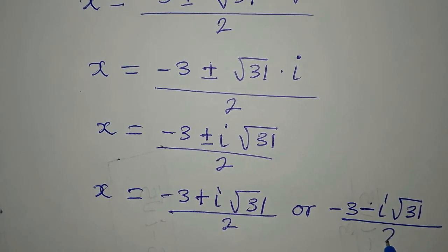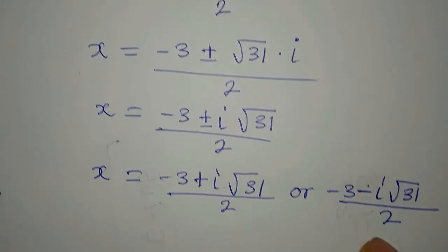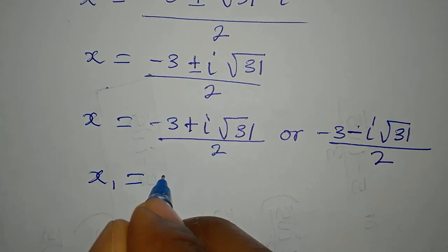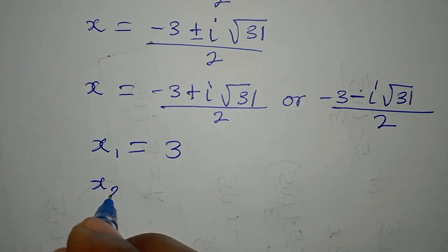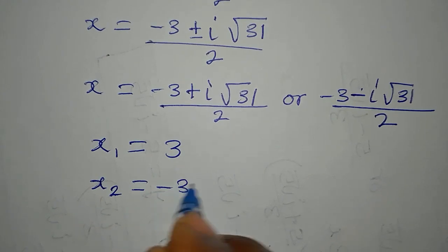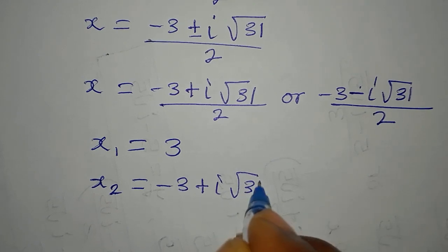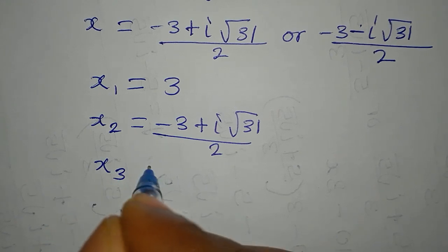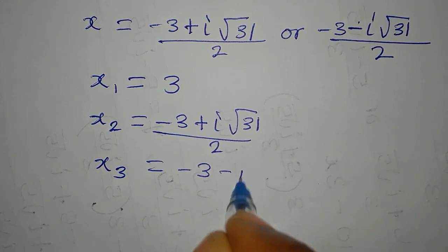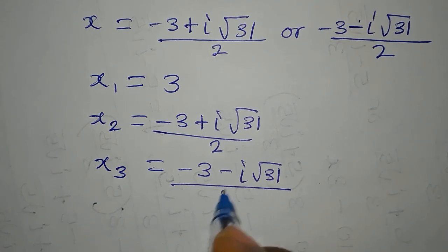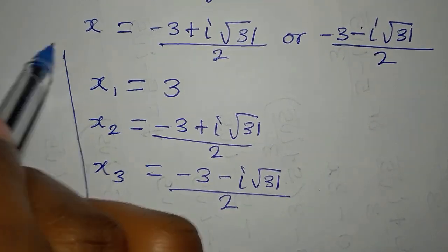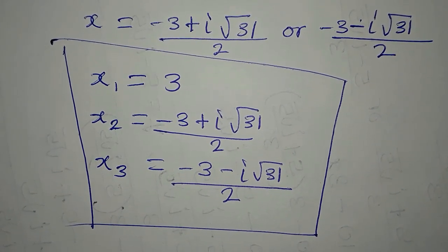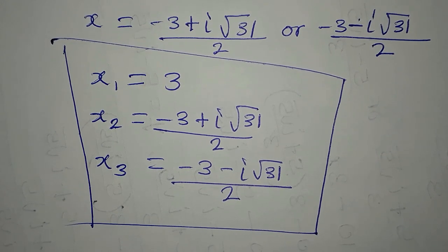Bringing the three solutions together: x₁ equals 3, x₂ equals minus 3 plus i times the square root of 31 over 2, and x₃ equals minus 3 minus i times the square root of 31 over 2. These are the three complete solutions to the equation. Thank you for watching to the end.